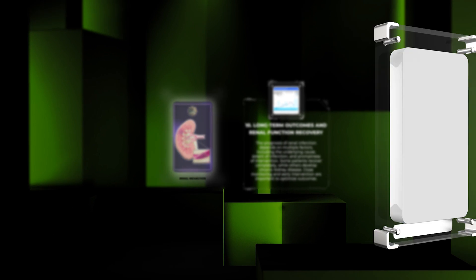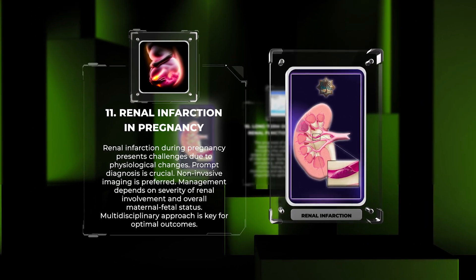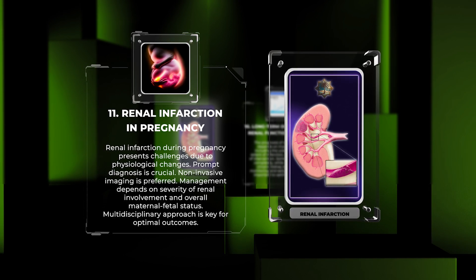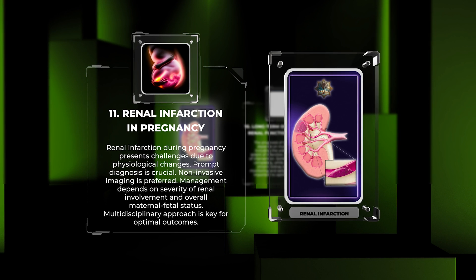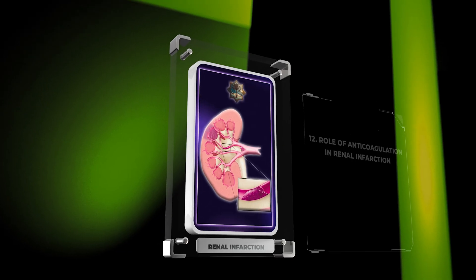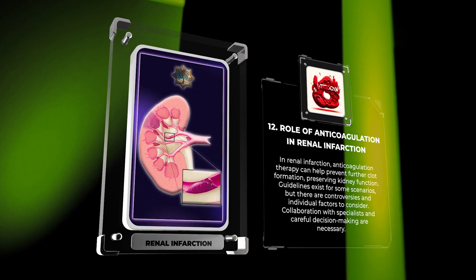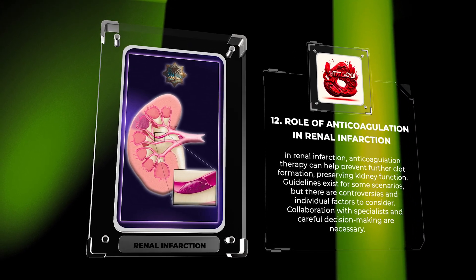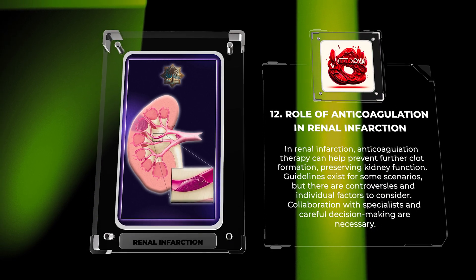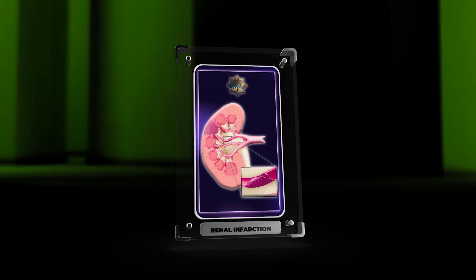Renal infarction during pregnancy presents challenges due to physiological changes. Prompt diagnosis is crucial, and non-invasive imaging is preferred. Management depends on the severity of renal involvement and overall maternal-fetal status, with a multidisciplinary approach being key for optimal outcomes. Anticoagulation therapy can help prevent further clot formation, preserving kidney function, though there are controversies and individual factors to consider. Collaboration with specialists and careful decision-making are necessary.